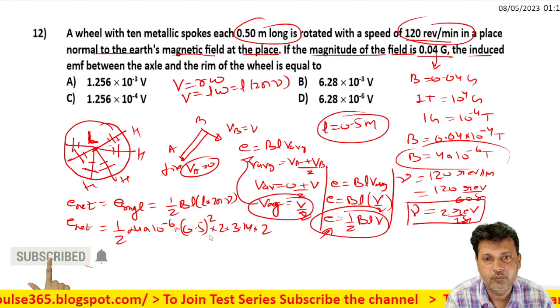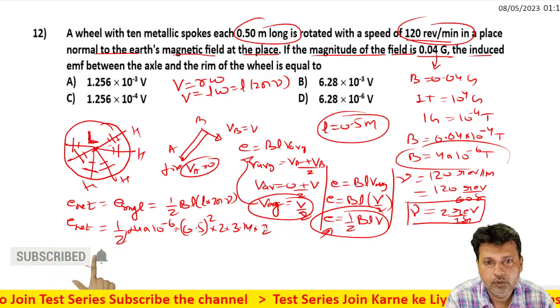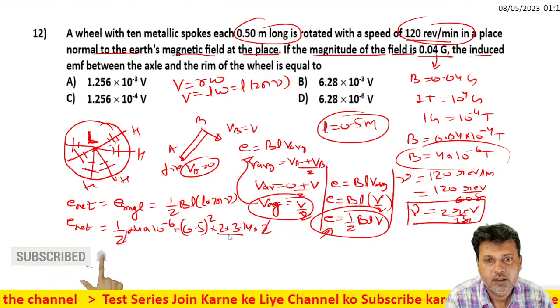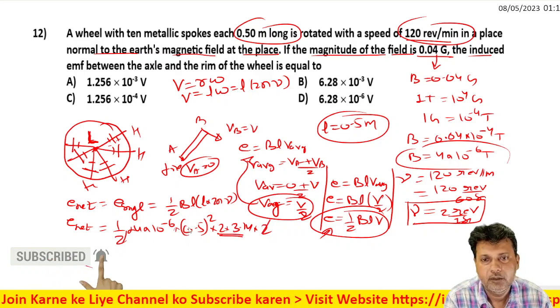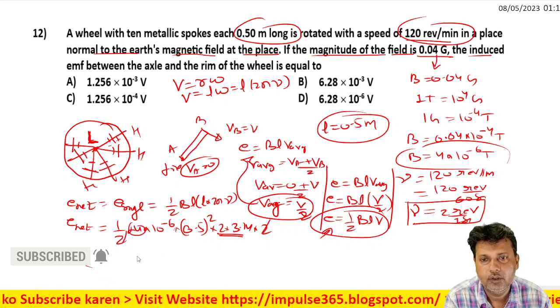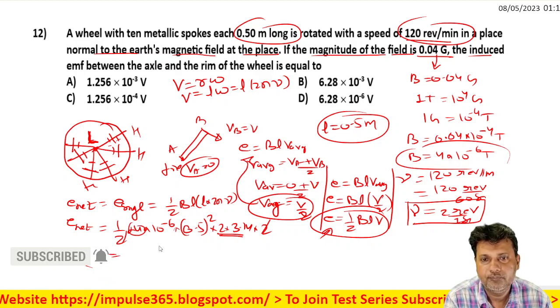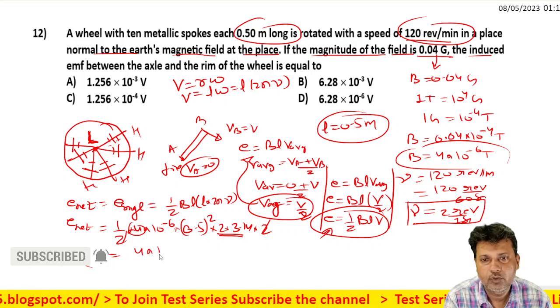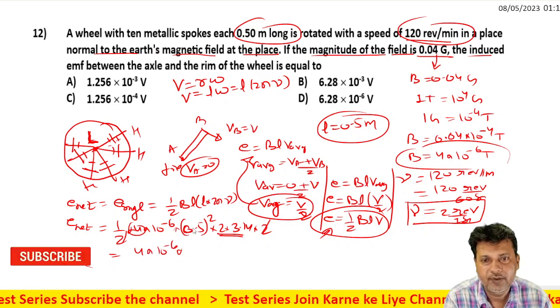So 2 cancels, and we get pi, which is 3.14, into 2 for frequency. So 2 times 3.14 gives 6.28. Then we have 0.5 squared and then 4 into 10 to the power minus 6.